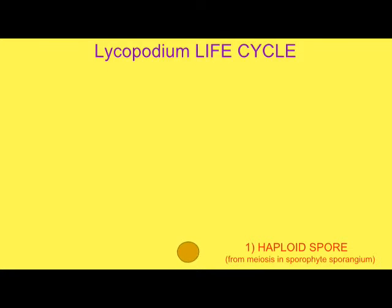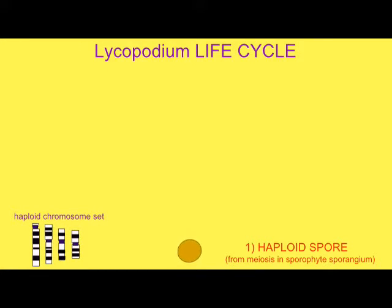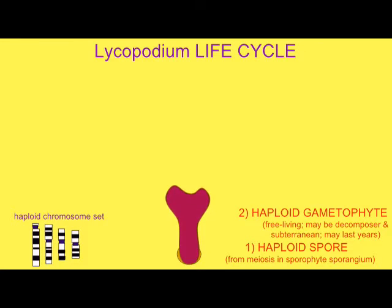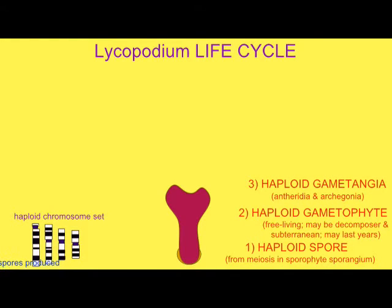In primitive vascular plants, one can observe a variety of life cycles. The life cycle of the club moss Lycopodium begins when a haploid spore produced from meiosis in the strobilus of a sporophyll from the sporophyte generation germinates. The gametophyte is free-living.